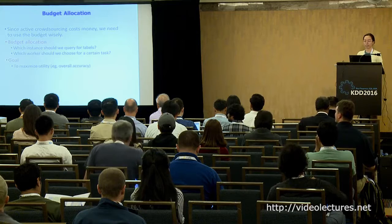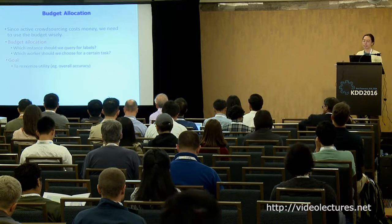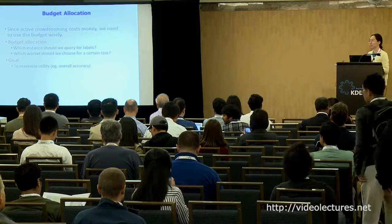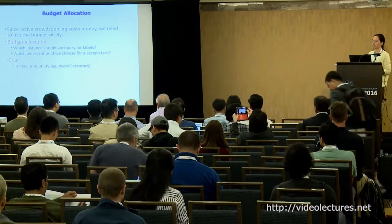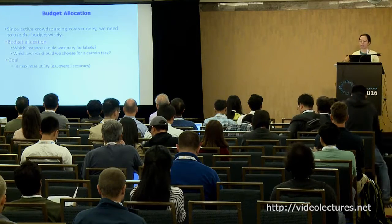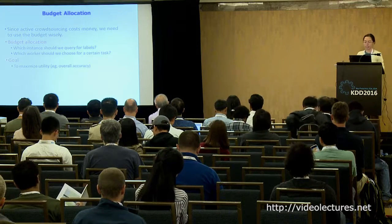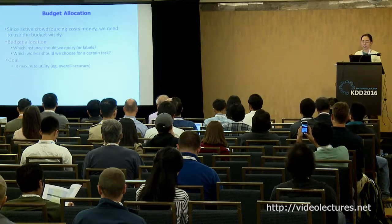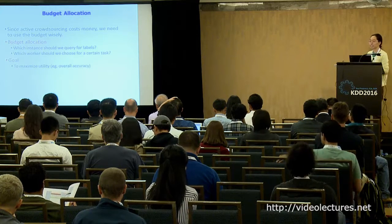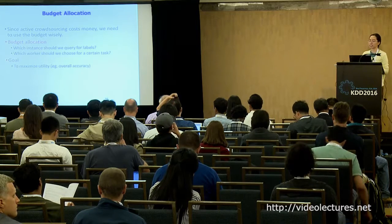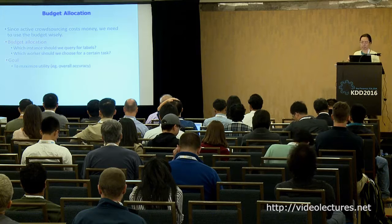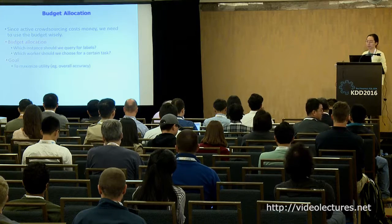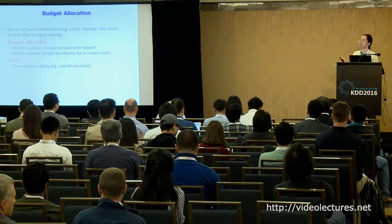Budget allocation is strongly motivated by the cost of active crowdsourcing. Most of the time you have a large dataset to label but a limited budget, which needs to cover both the platform and the workers. Budget allocation is usually studied from two perspectives: the instance perspective — which instance should we query for labels? — and the worker perspective — which worker should we choose for a certain task? The goal is to maximize some type of utility, for example the overall accuracy of the final result.